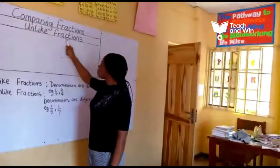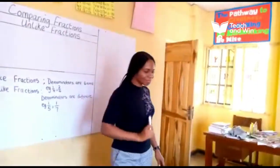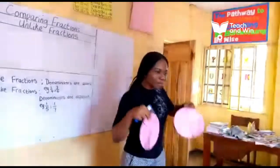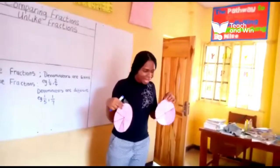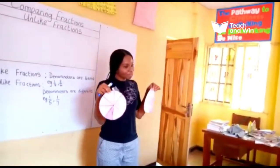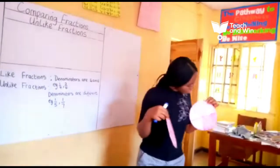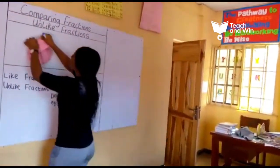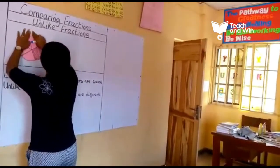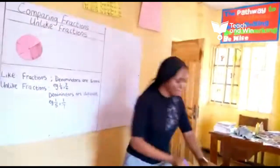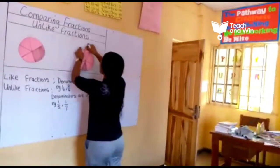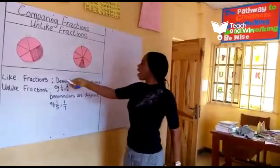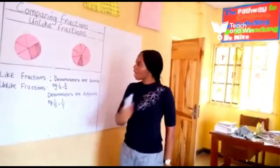Good — we are going to be learning such fractions today, and the fractions are called unlike fractions. Look at what I have here. I have two beautiful circles. These two beautiful circles are divided into different parts. Now I'm going to place my beautiful circles on the board.